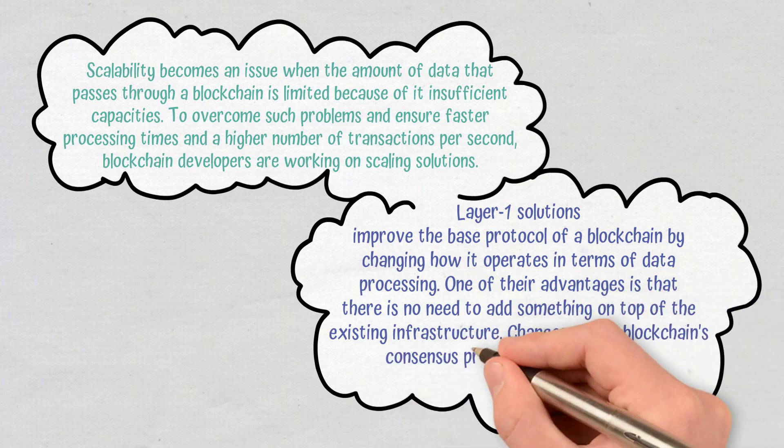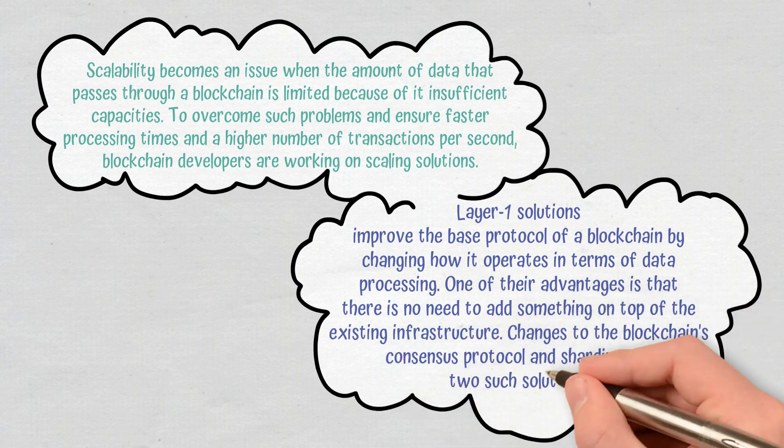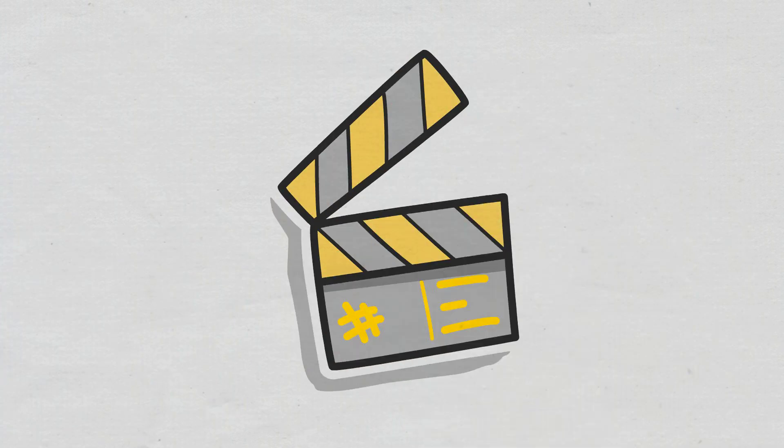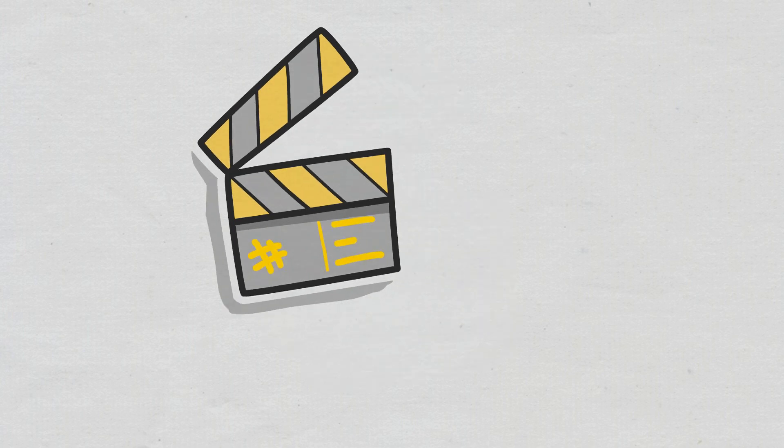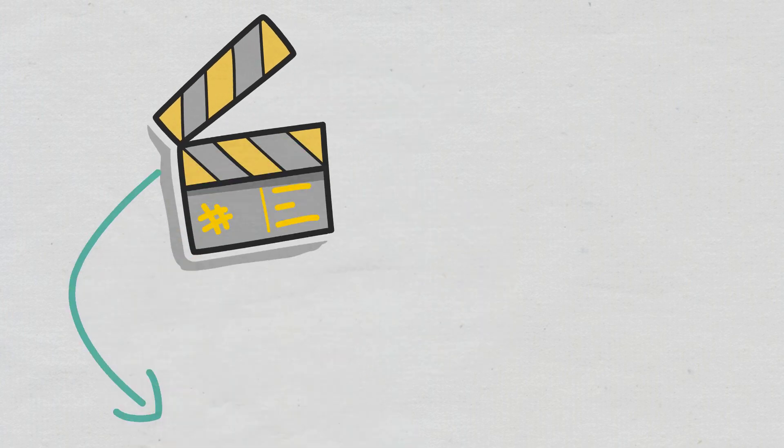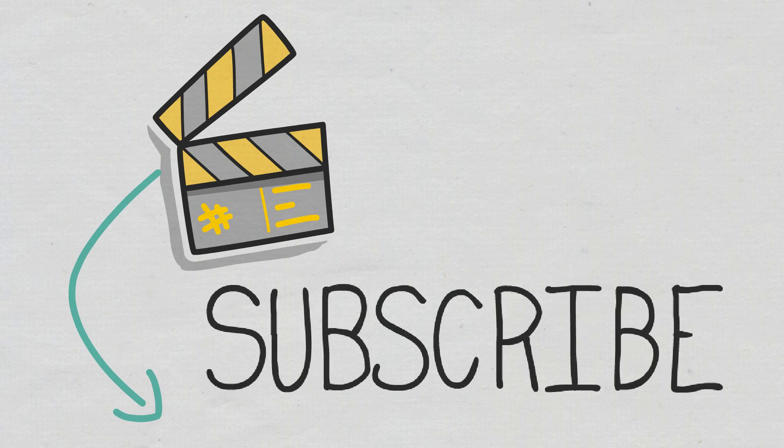Changes to the blockchain's consensus protocol and sharding are two such solutions. I hope you enjoyed today's video and if you have other questions about Layer 1 blockchain solutions, don't hesitate to tell us in the comment section. So much for today, don't forget to subscribe to the Cryptomatics channel if you want to stay up to date with the latest concepts in the crypto sector.